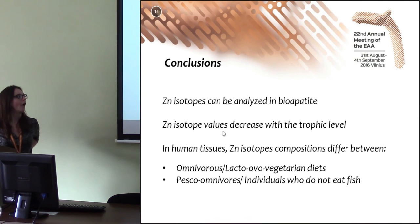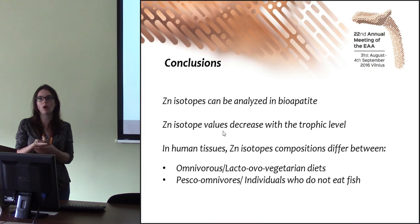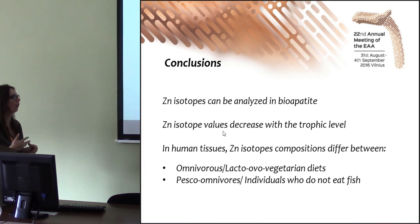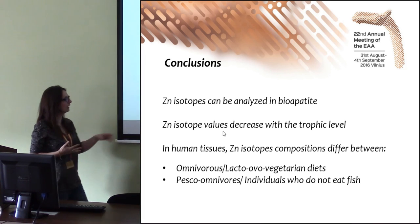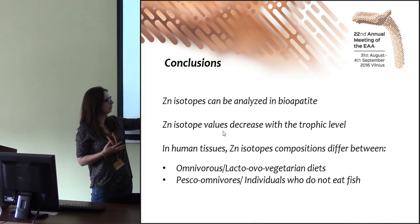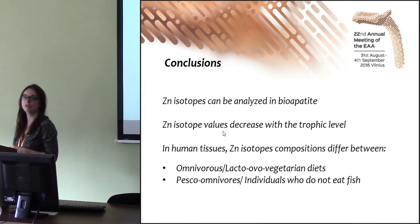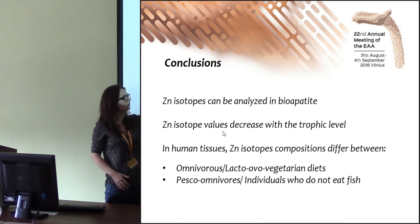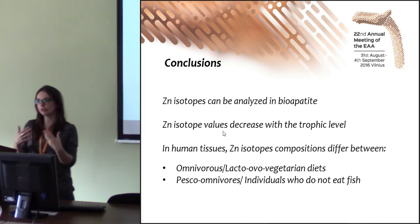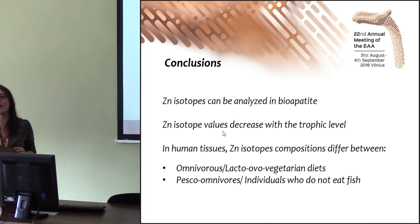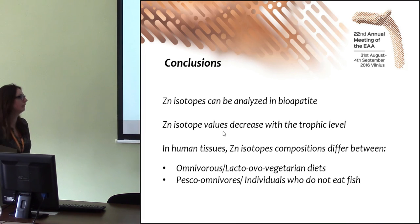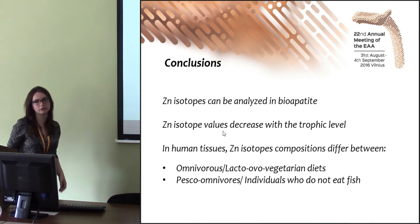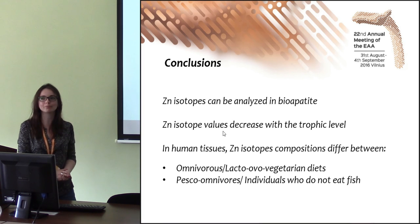In conclusion, zinc isotopes can be analyzed in bioapatite; values decrease with trophic level. We have shown that we can likely distinguish fish-consuming individuals from those who do not eat fish using zinc isotope composition. In blood it has been shown that we can distinguish omnivores and lacto-ovo-vegetarian diets. In the future we plan to characterize more archaeological populations to see how we can differentiate new types of diets.